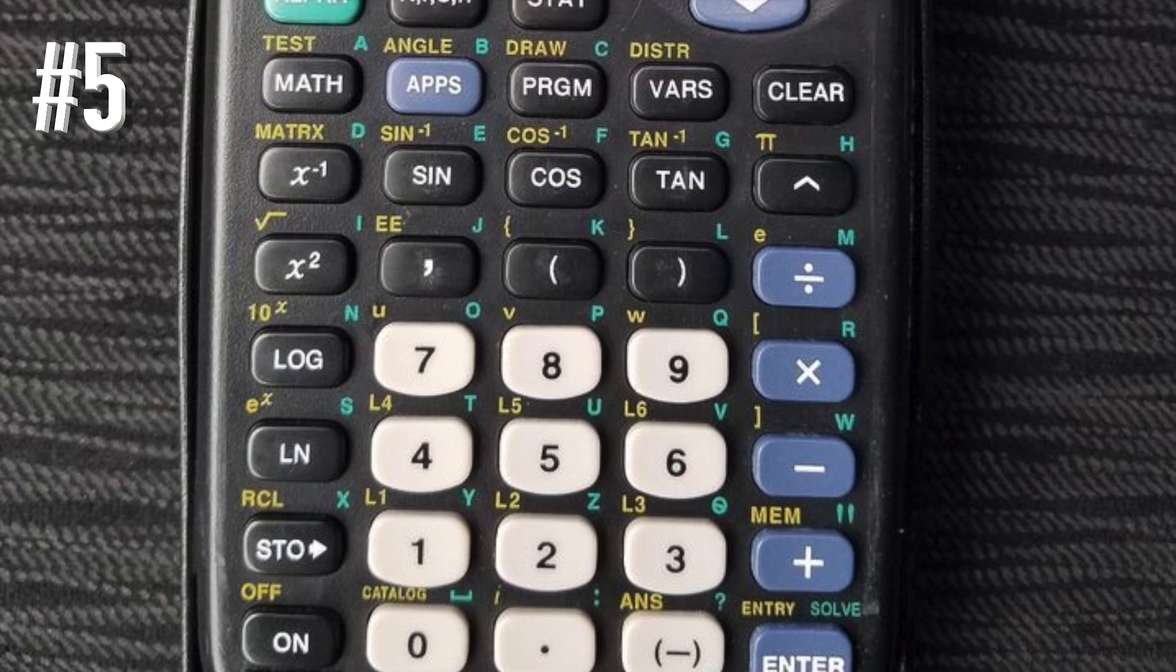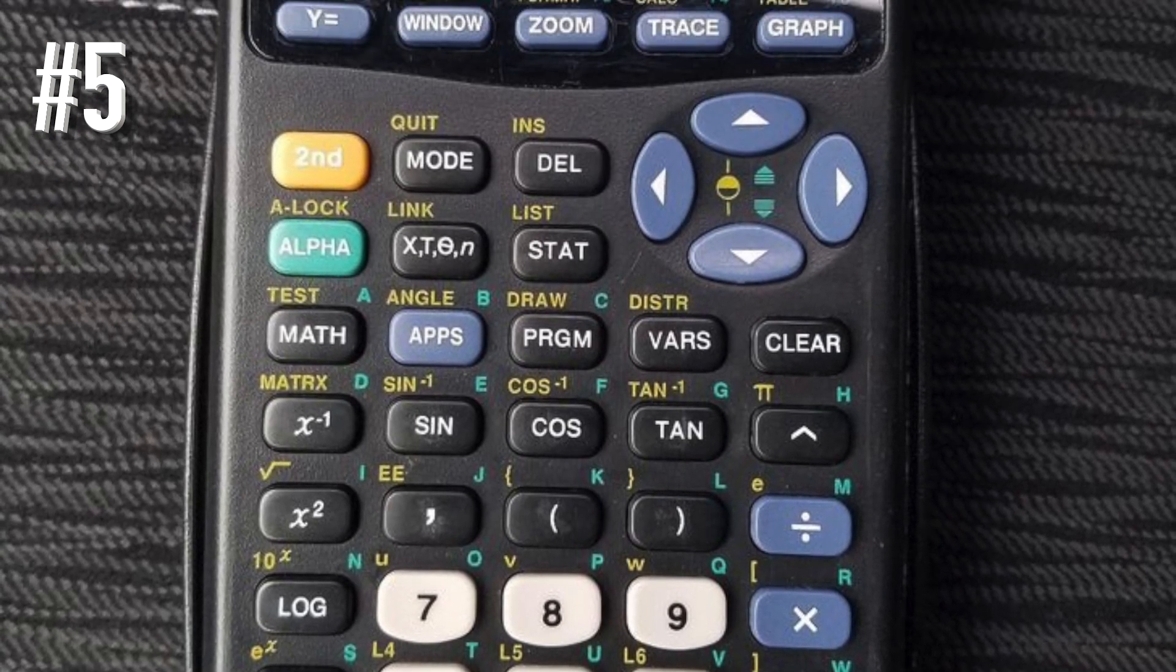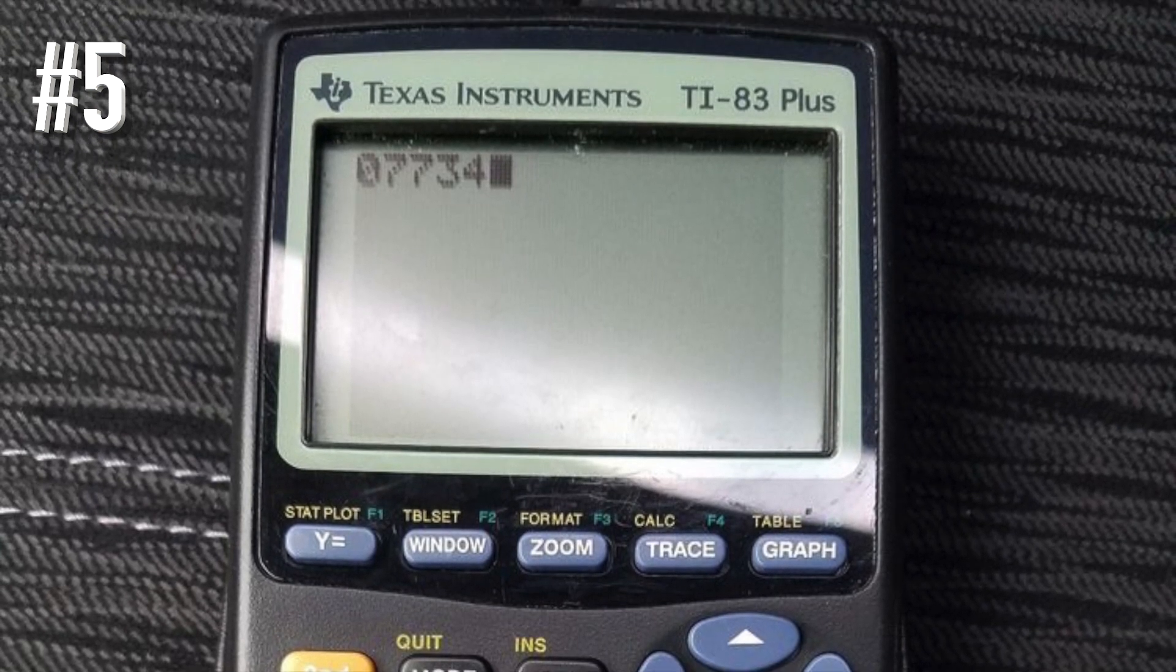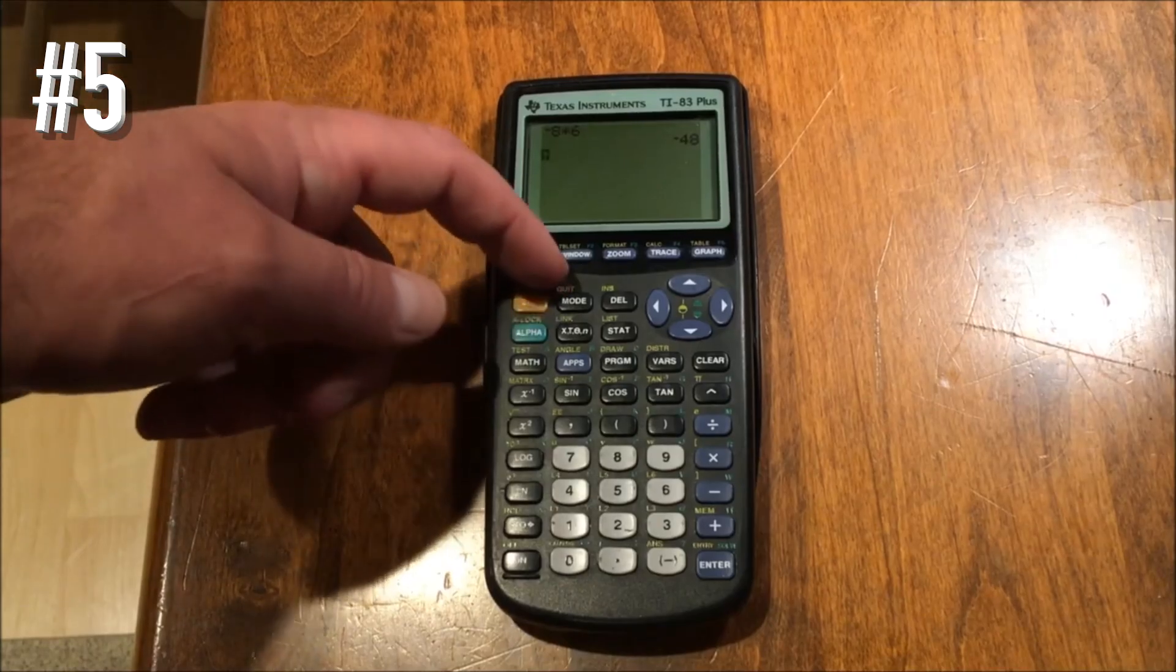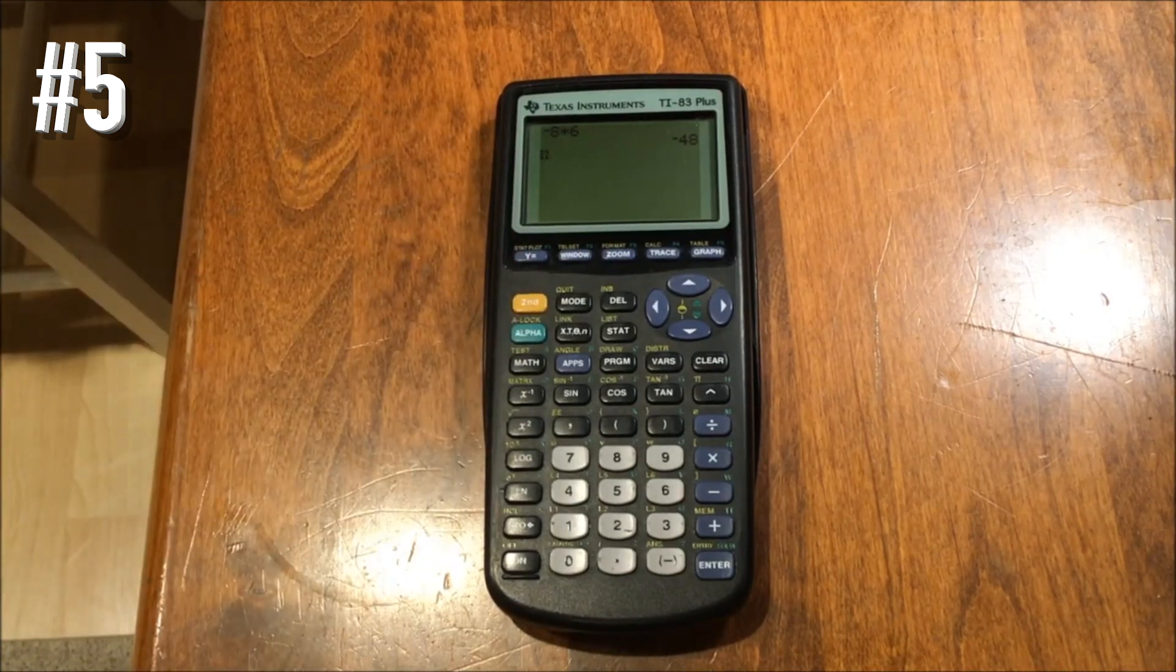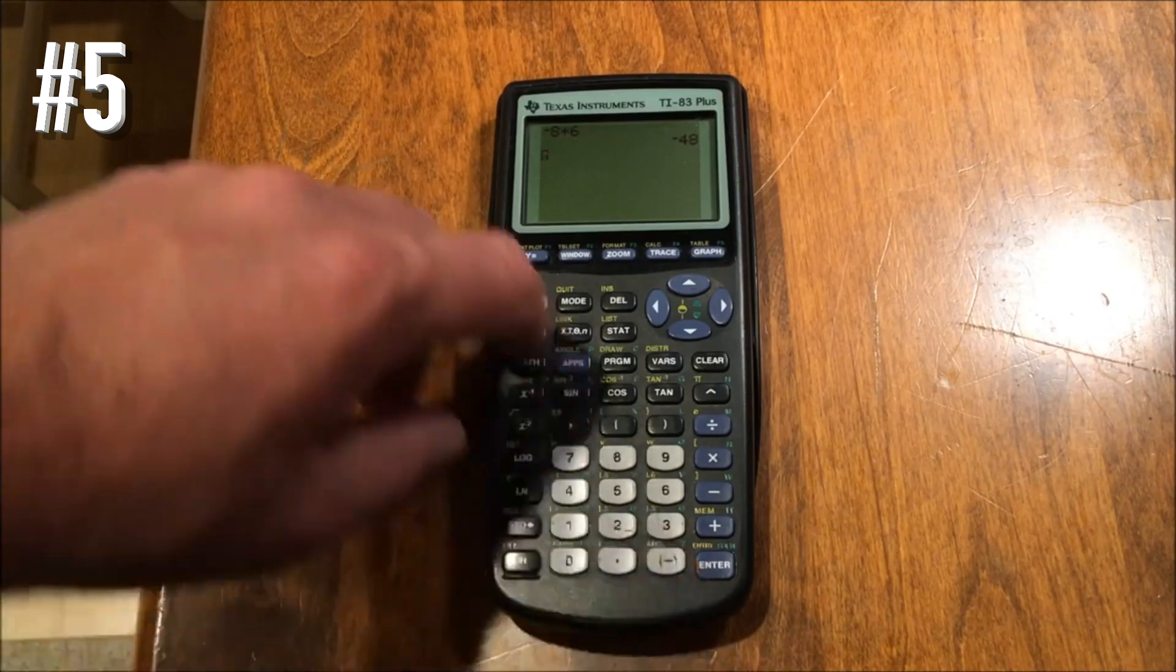The LCD screen features 64 by 96 pixel resolution and offers a clear display. The built-in memory can store and analyze up to 10 matrices. The calculator also features a split screen that's helpful for tracing graphs while scrolling through the table values.